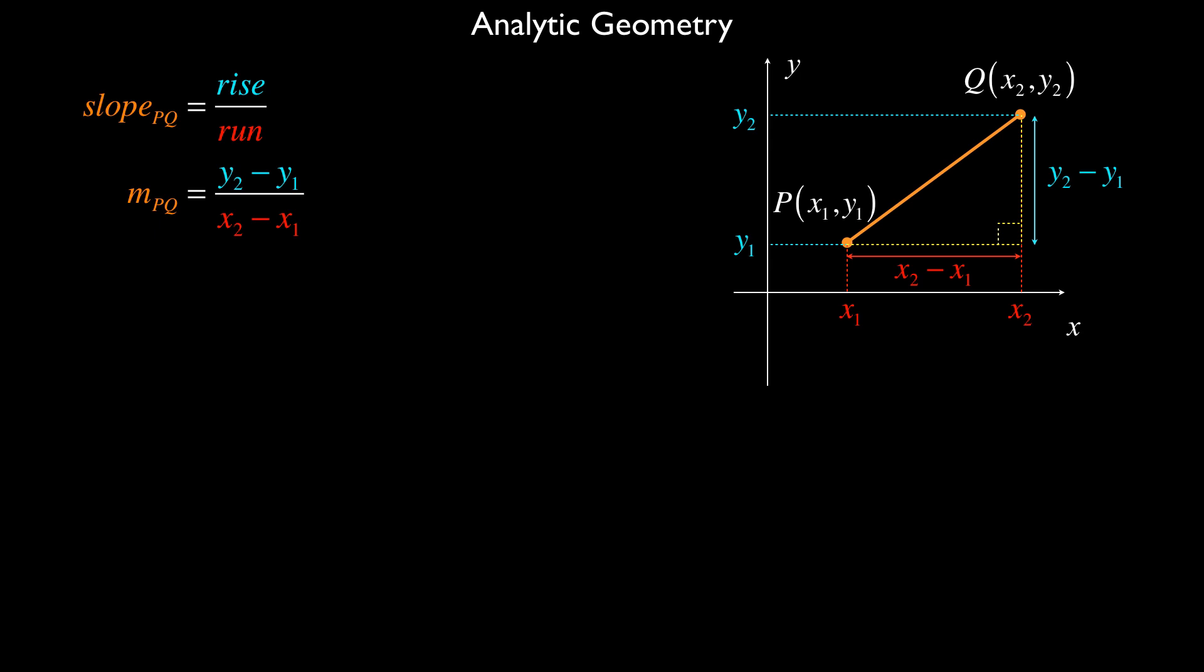Now, the second formula I'd like to develop is the distance, the distance or the length of the line segment connecting P to Q. When I look at that diagram, I recognize that it is a right triangle. And I understand that in right triangles, we have the Pythagorean theorem. The Pythagorean theorem states that the square of the hypotenuse is equal to the sum of the squares of the other two sides.